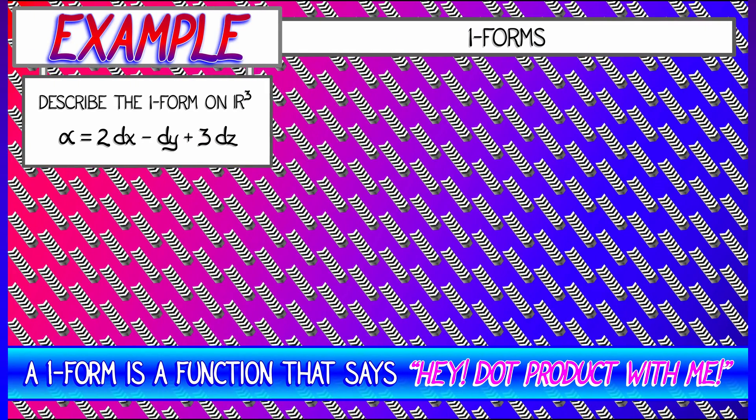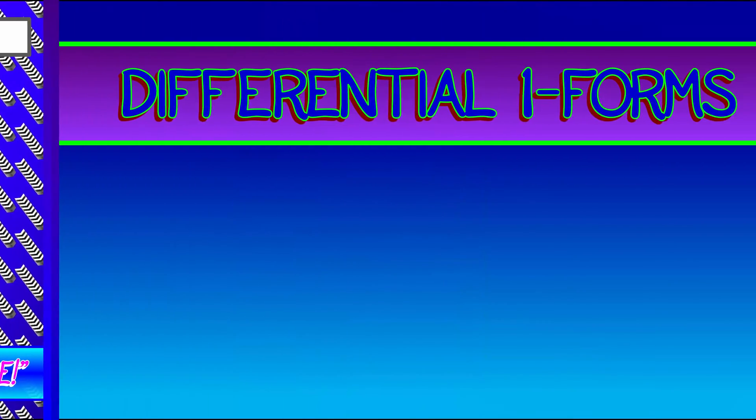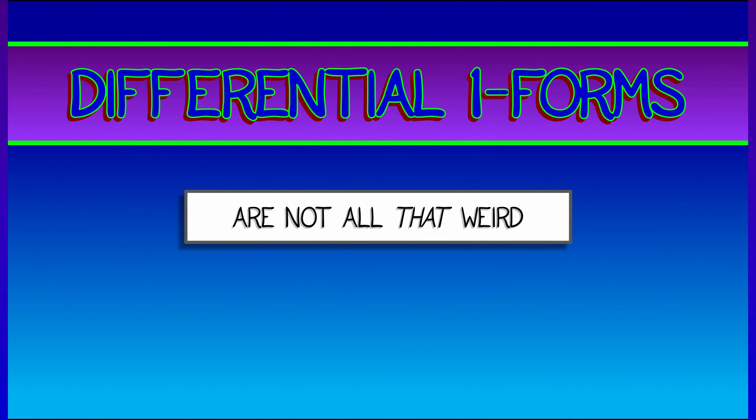But we could, for example, go back and look at the simple example we did of a linear one-form, 2dx - dy + 3dz. And we could imagine that one-form as being constant and oriented in a certain direction.